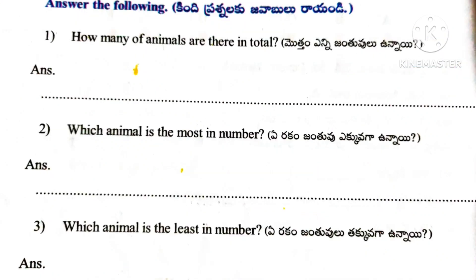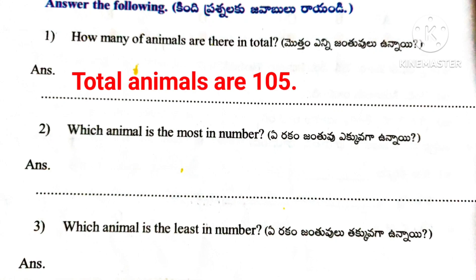Based on the table, here are some questions. First question: How many animals are there in total? Total animals are 105. Second question: Which animal is the most in number? Sheep is the most in number. Third question: Which animal is the least in number? Cat is the least in number.